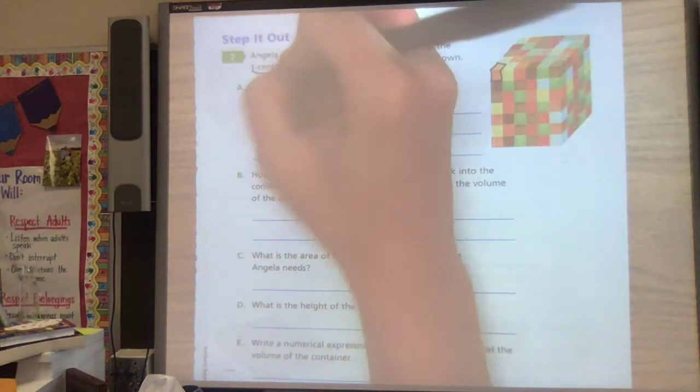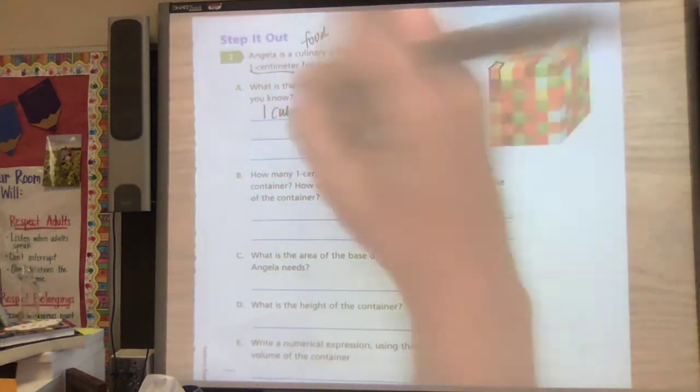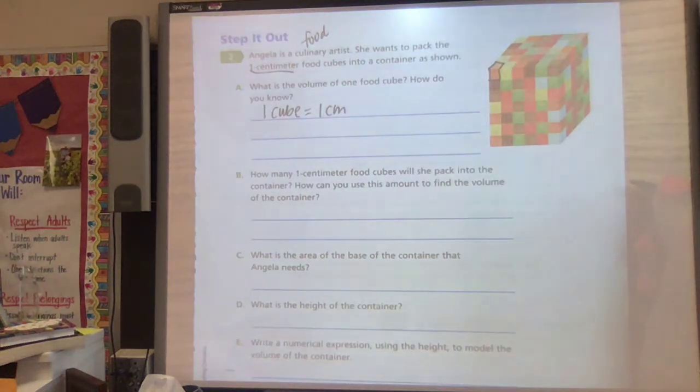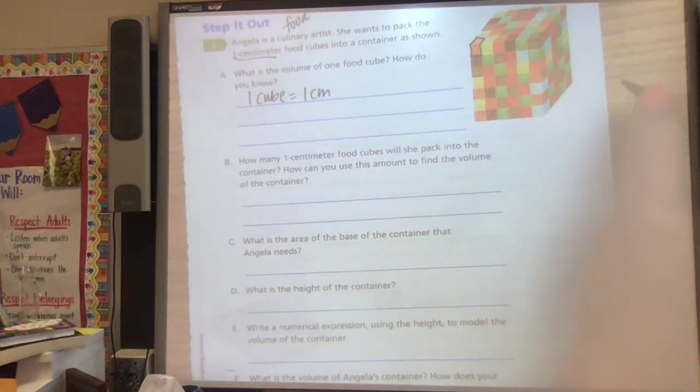All right, let's think about what we're going to do. So one cube is one centimeter because it tells me that in my directions. How many one-centimeter food cubes will she pack into the container? How can you use this amount to find the volume?